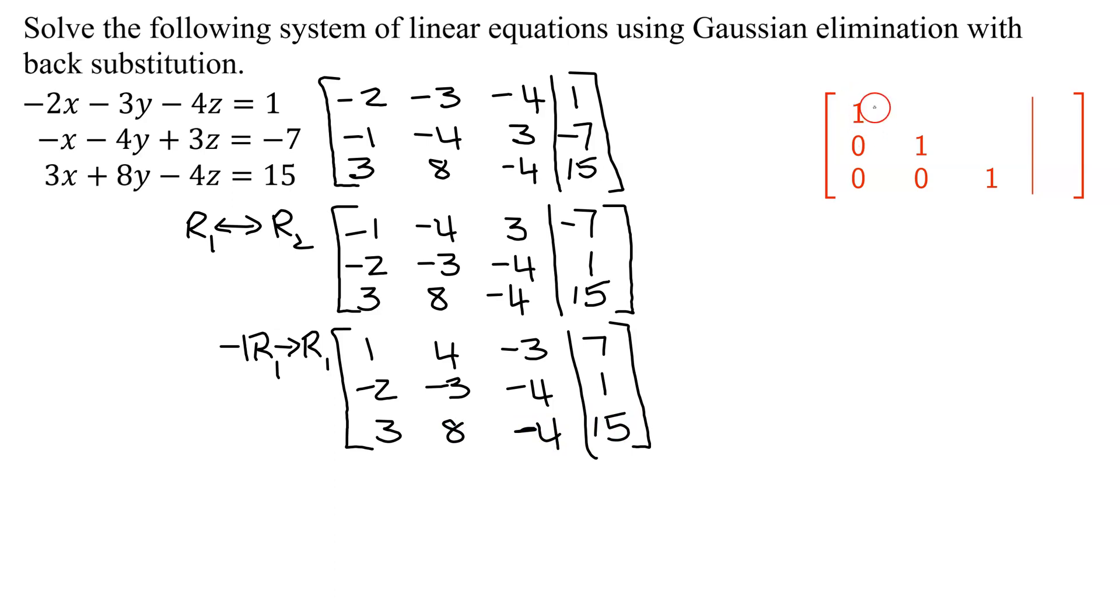So I've got the 1 in the first position. That is done. I'm happy with row 1, so I won't change it from this point on. So in my next matrix, I already know that row 1 is going to be 1, 4, negative 3, and 7.